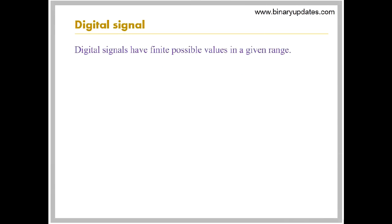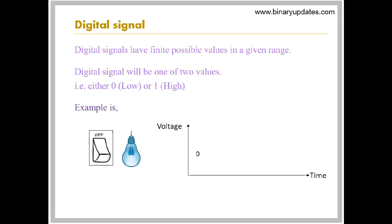Digital signals have finite possible values in a given range. Digital signal will be one of two values. That is, either zero or one. Light switch is a good example of digital signal. It is either on or off. That is, it has specific value at specific time.